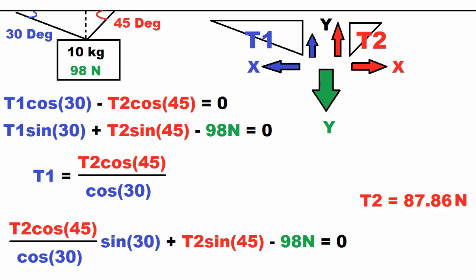Now if you want to find T1, you can just plug in T2 into either of the equations and solve for T1. So for T1, we get 71.74 newtons.